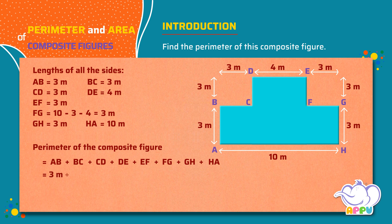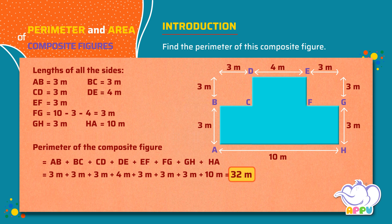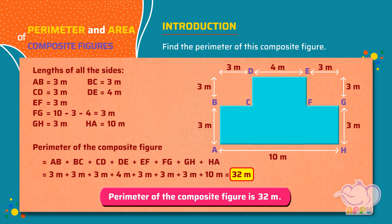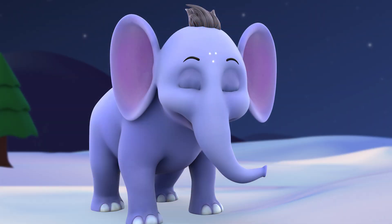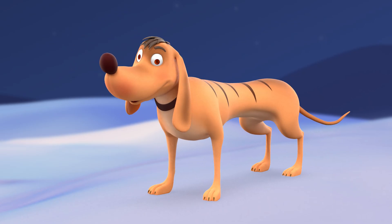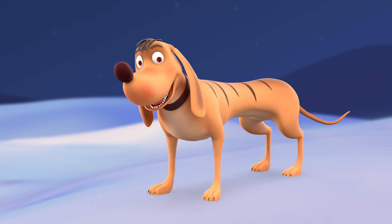The perimeter of the composite figure equals 3 meters plus 3 meters plus 3 meters plus 10 meters, which equals 32 meters. So the perimeter of the composite figure is 32 meters. Did you get it? Yes I did, but I need to do more exercises to get better at working them out.